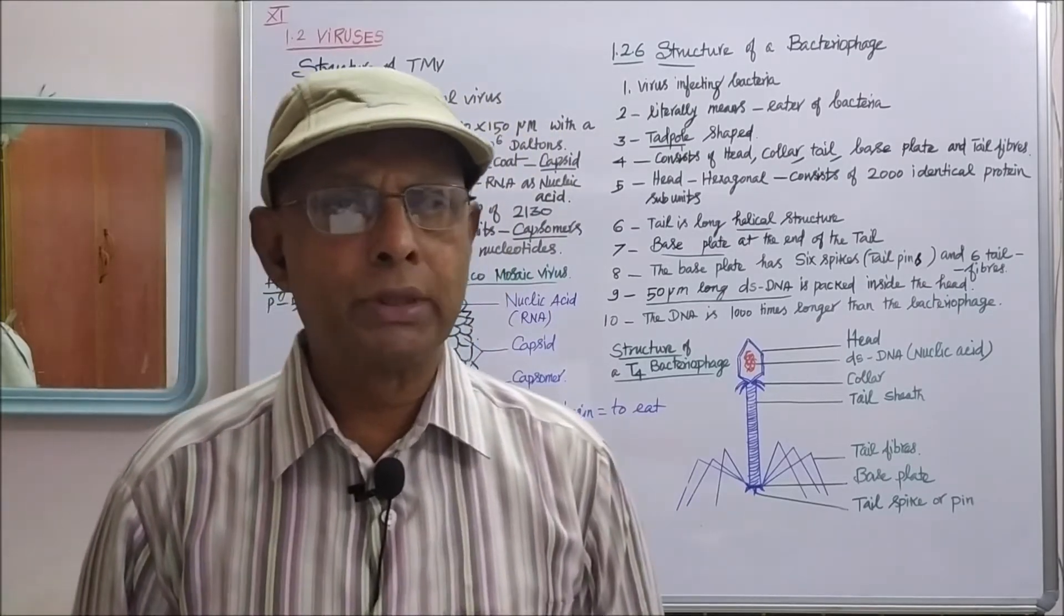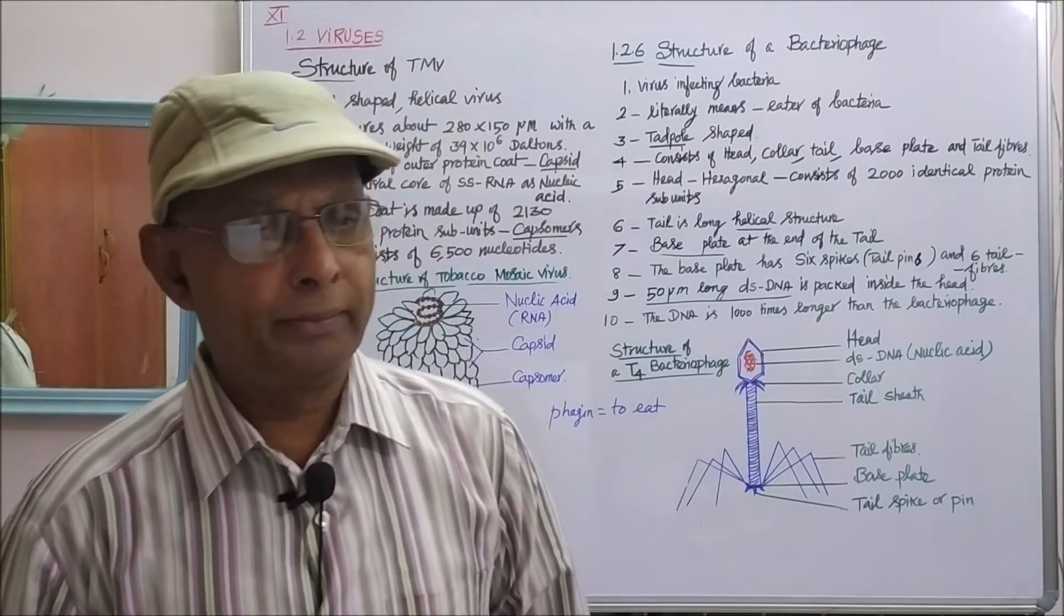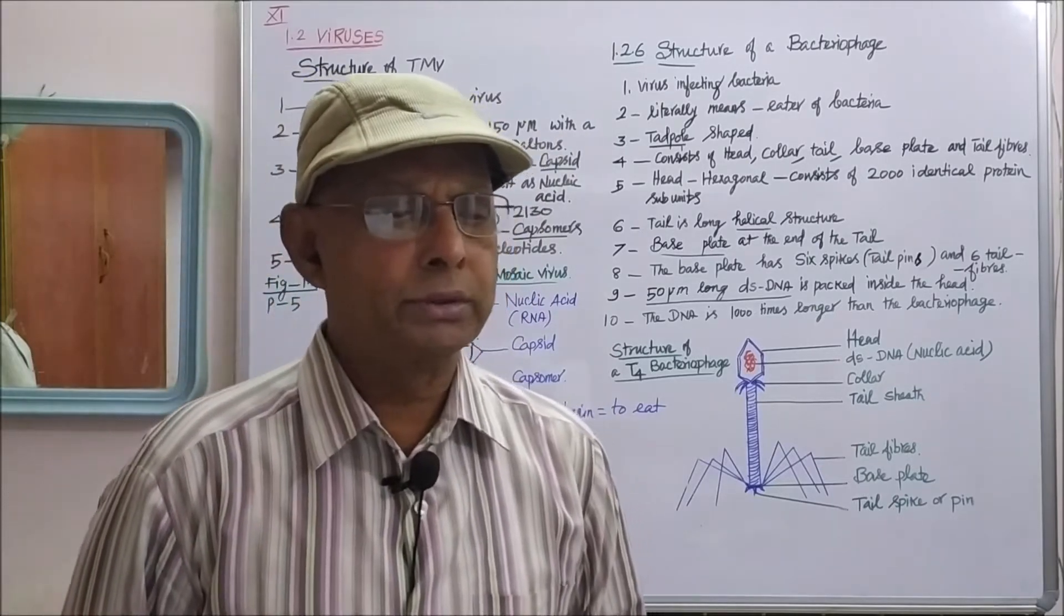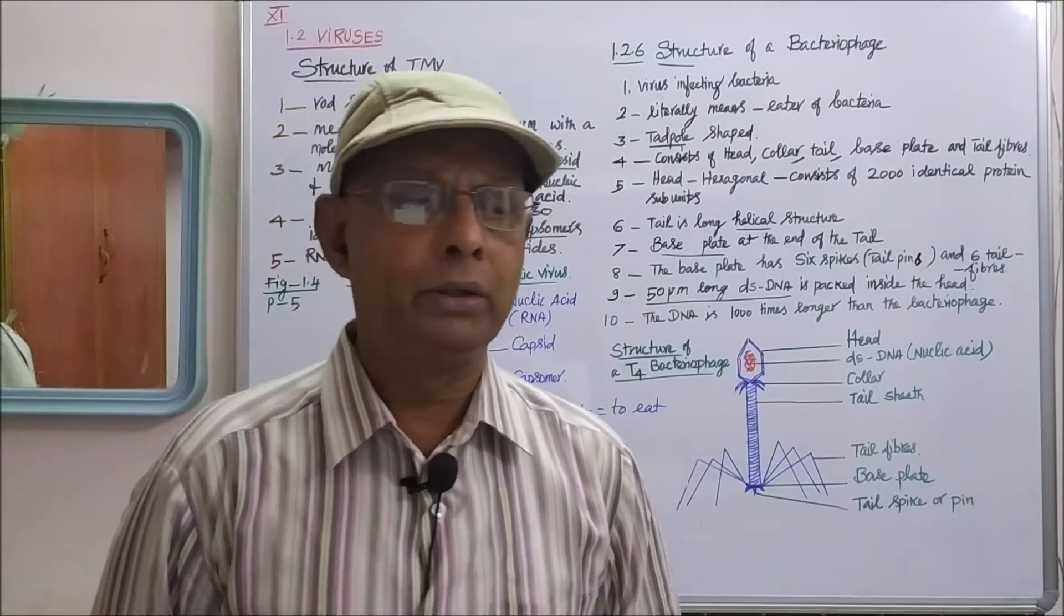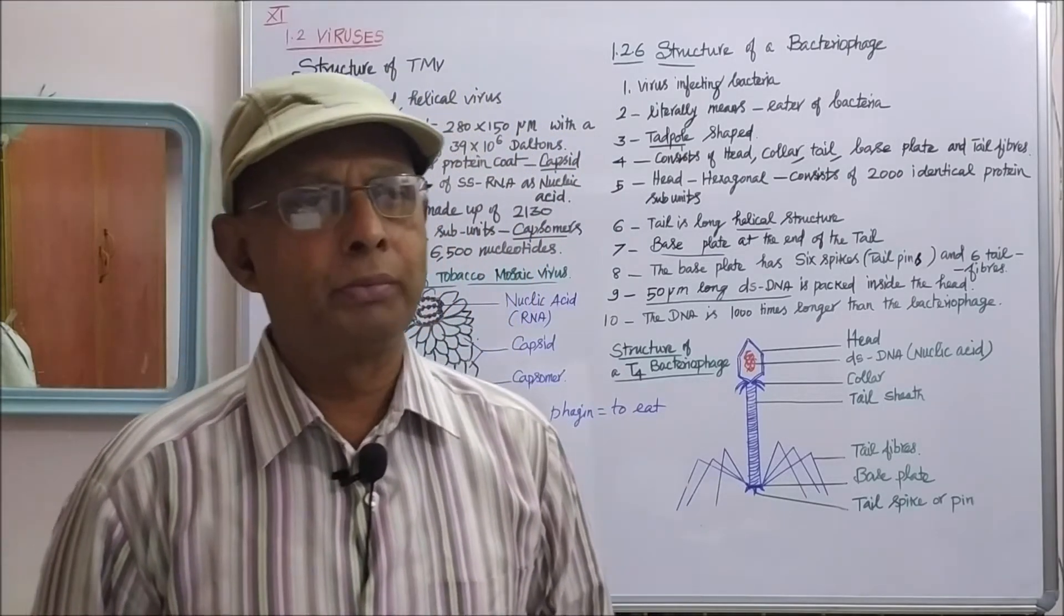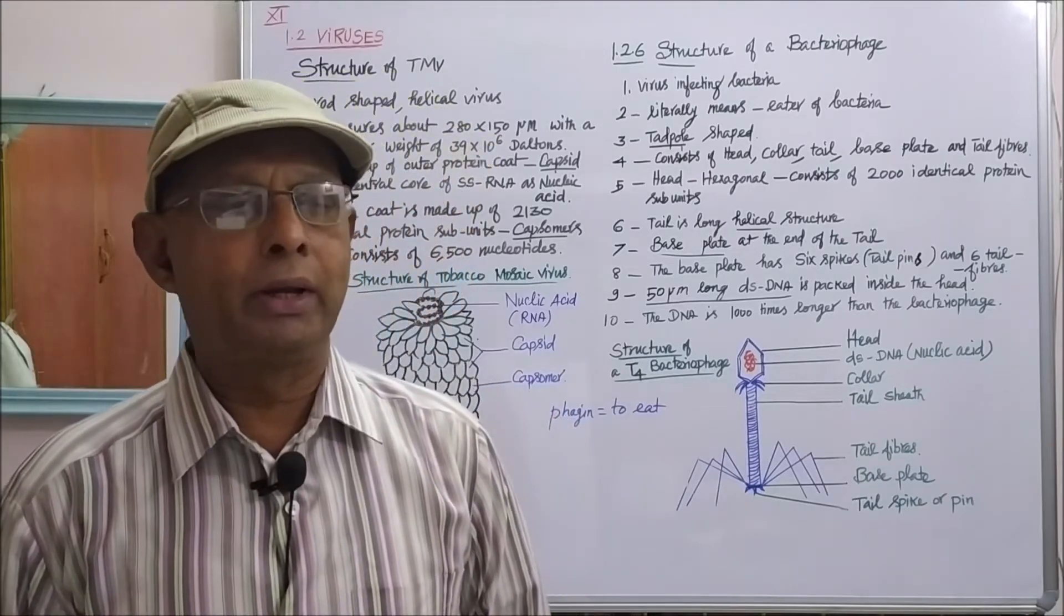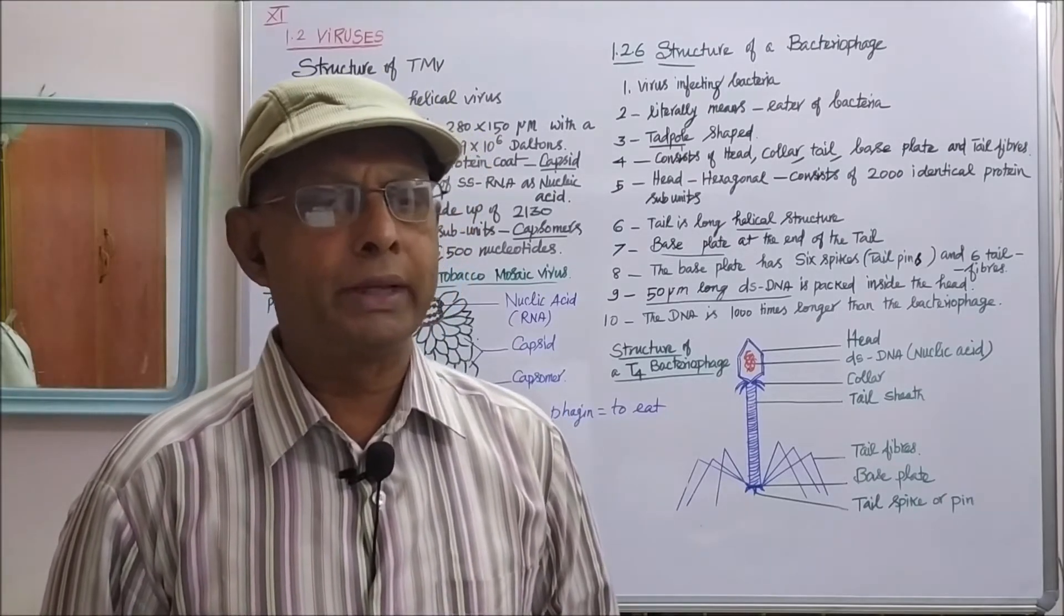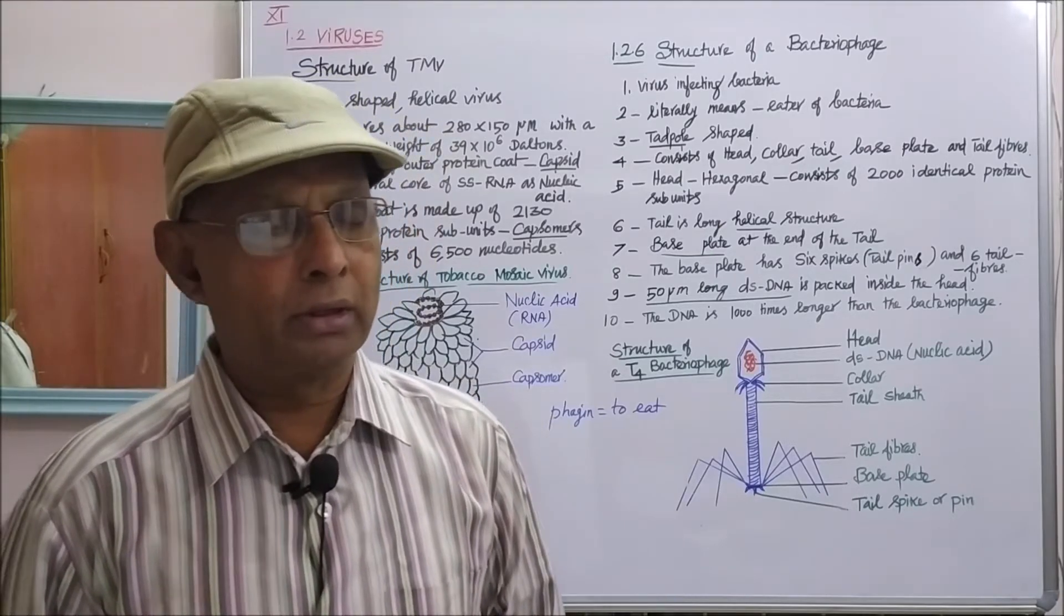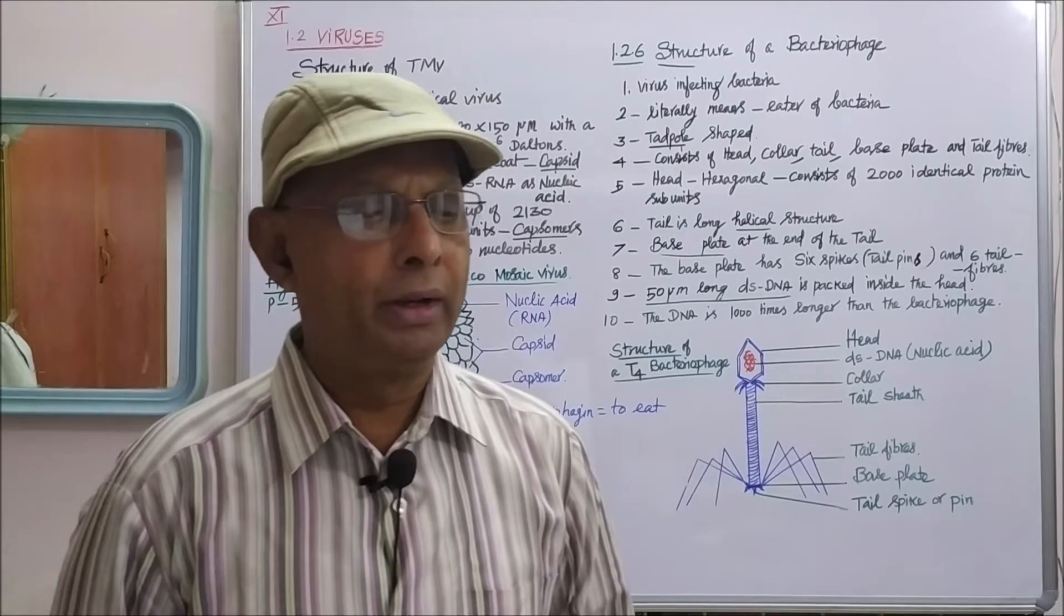Tobacco mosaic virus was first discovered by Dmitry Ivanovsky in the year 1892 from the tobacco mosaic plant. He first identified the tobacco mosaic virus from the infected tobacco mosaic plant.